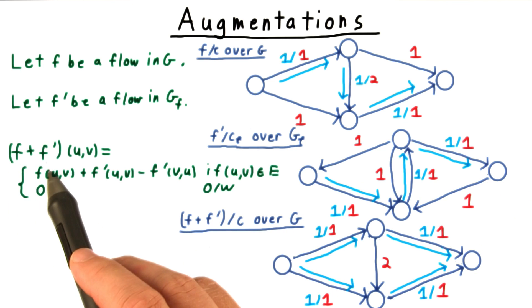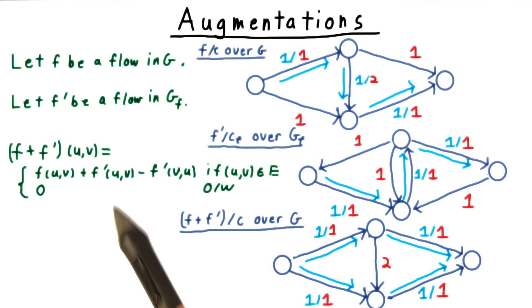Then, we add these two flows together using a special definition. Note, only one of these two values of F prime can be positive.